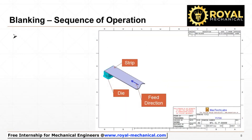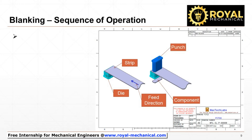Now let's understand the sequence of operations of blanking a component from the strip. As you can see, the raw material strip is placed on the die. The punch, which is mounted on the press slide, comes down and shears the strip to blank the component. Observe the condition of the strip after blanking.